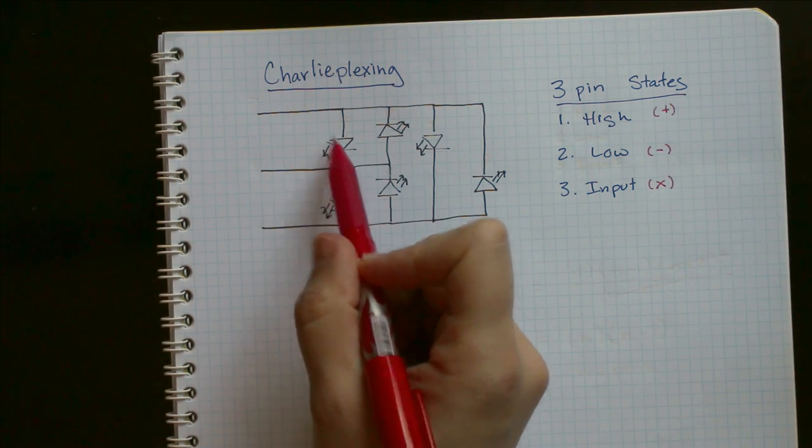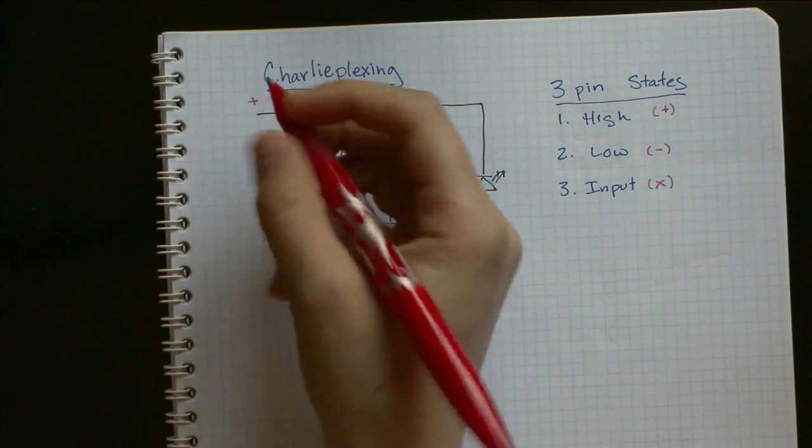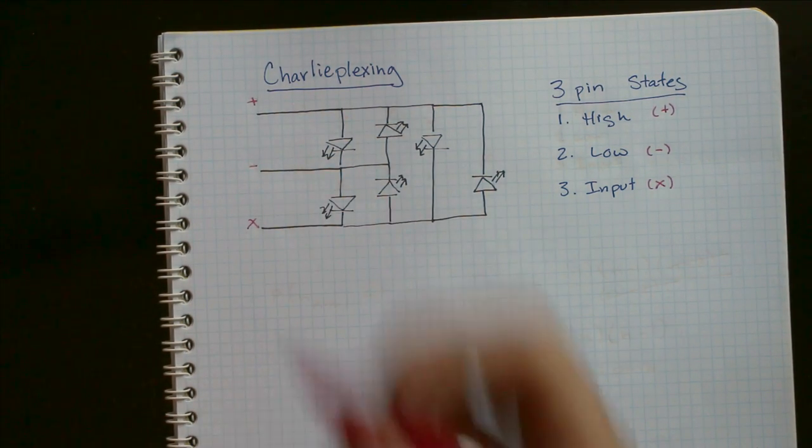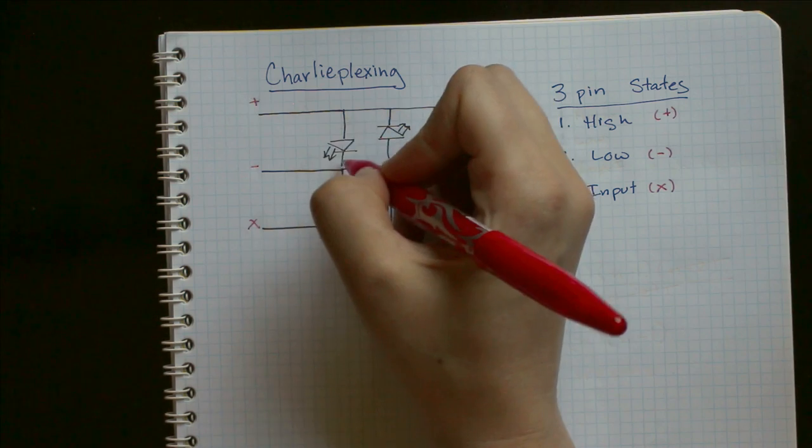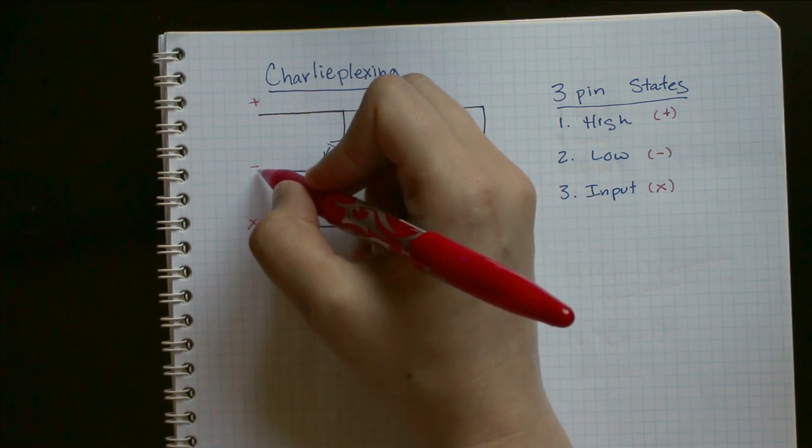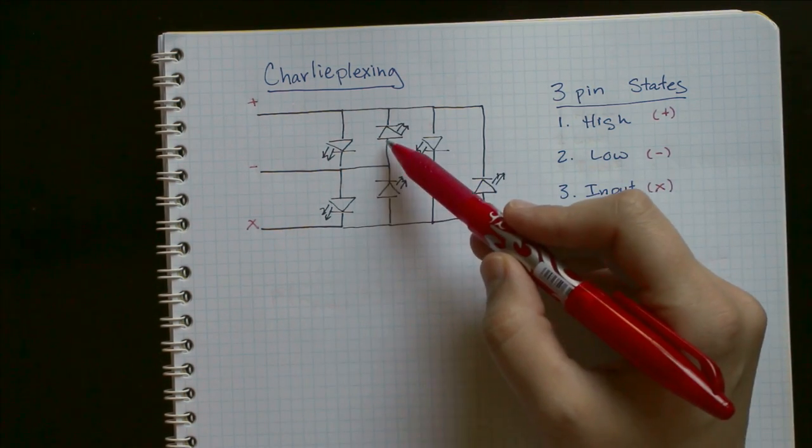So in order to turn on this LED in the system, we need to set this to high, this to low, and this to input. And that way, current can flow from this pin through the LED to this pin without flowing through any of these other LEDs.